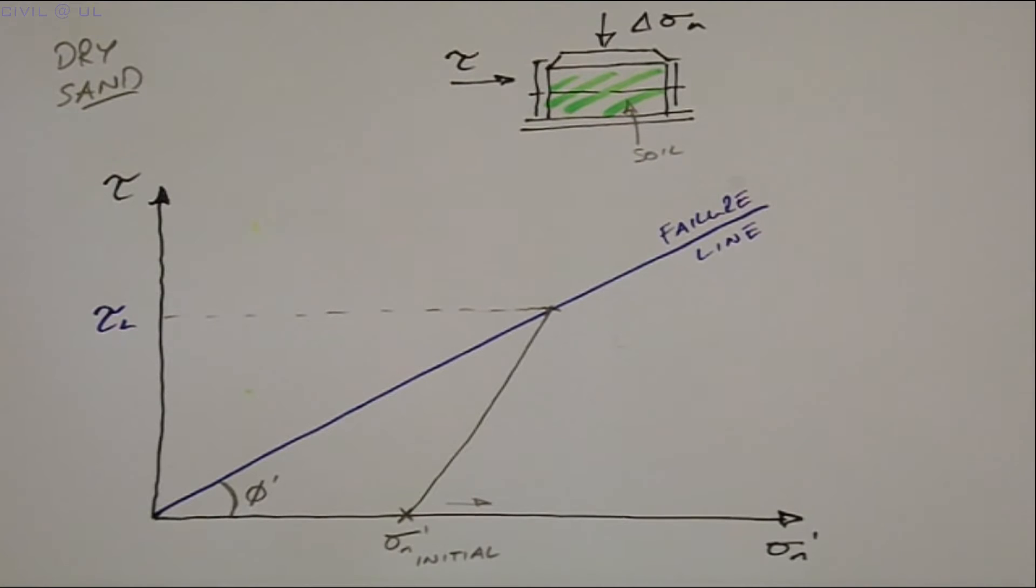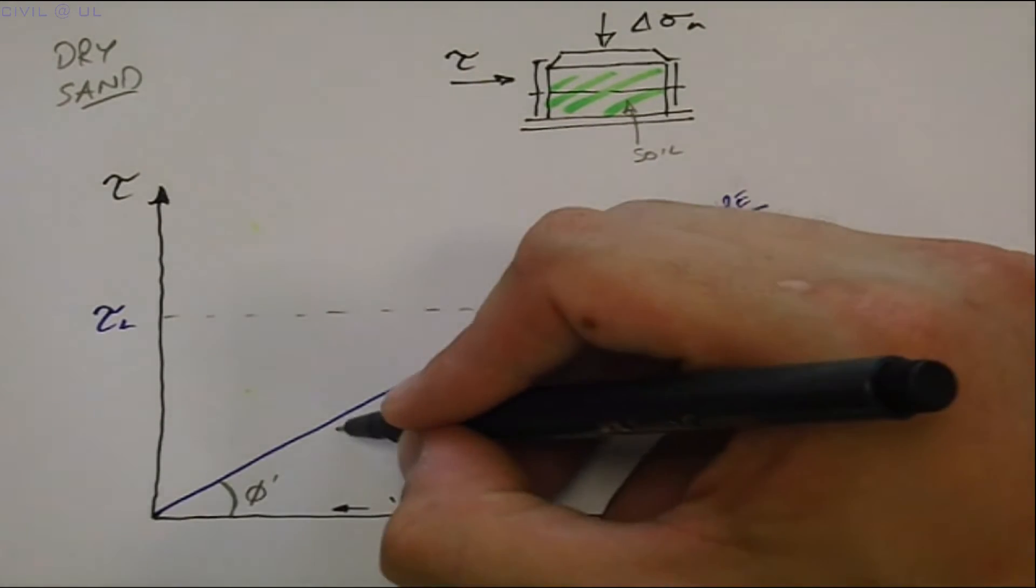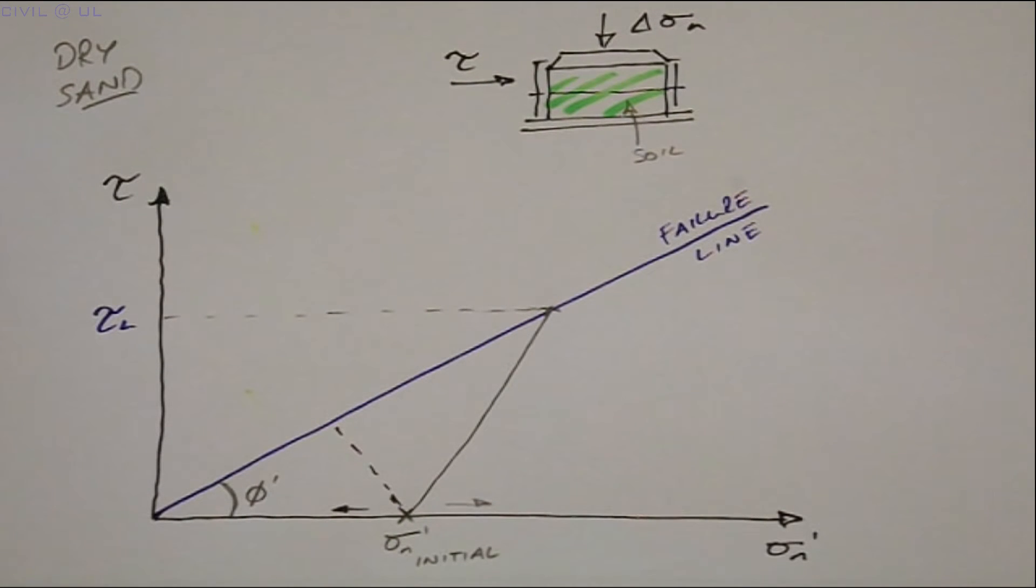If we start the second test at the same initial normal effective stress, but unloading or reducing it as the specimen is sheared, this gives us the following stress path. This time failure occurs at a shear strength of tau U for unloading. Note, we get two different shear strengths based solely on the path taken to failure.